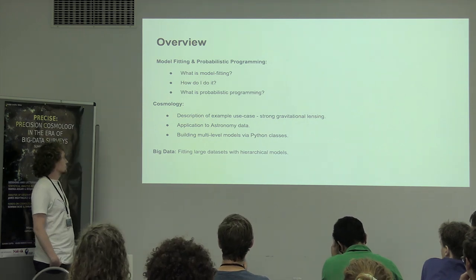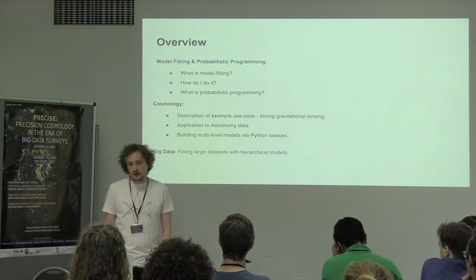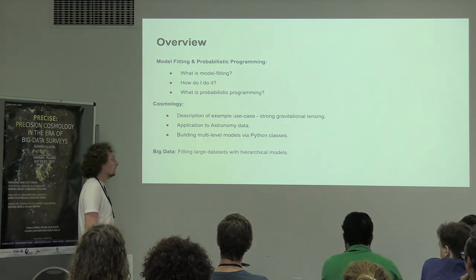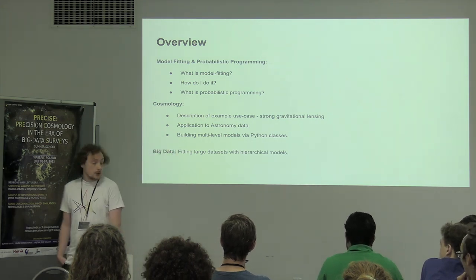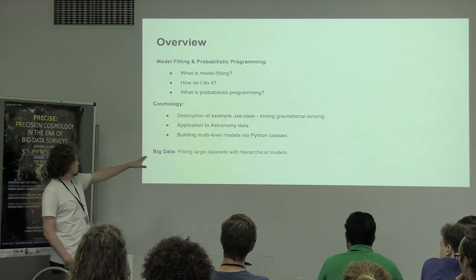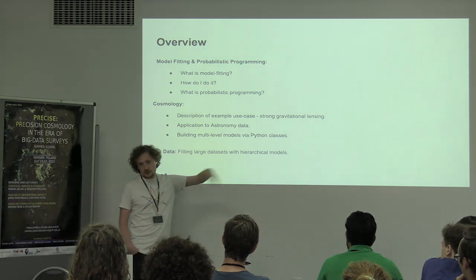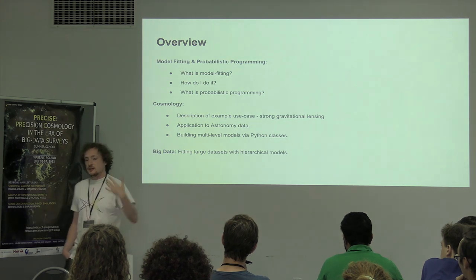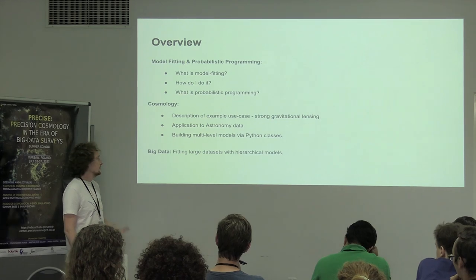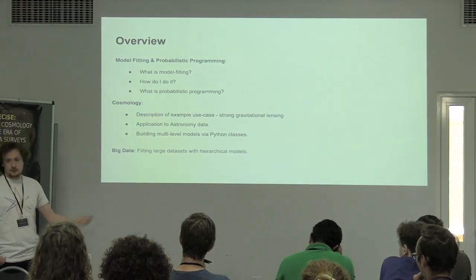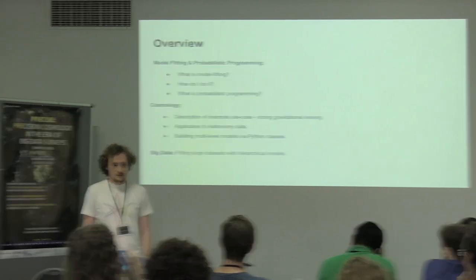We're going to go through an actual application using astronomy data — some public space telescope data for strong lensing — and we'll learn how we can measure the mass of the lens galaxy and reconstruct the background source galaxy. Then, towards the end, we get into big data: instead of analyzing one lens galaxy, how do we analyze 10,000 lens galaxies? Instead of analyzing one spectra of a cluster, how do I do spectral analysis on the whole SDSS database?